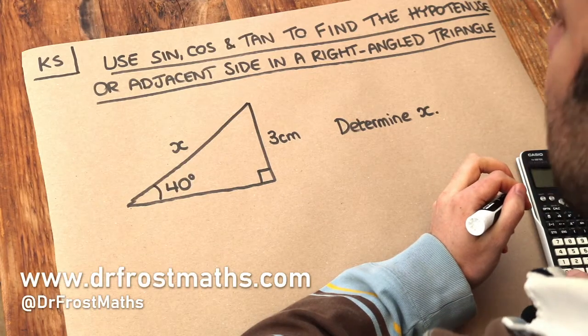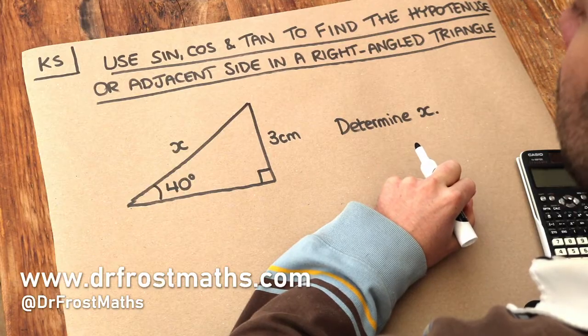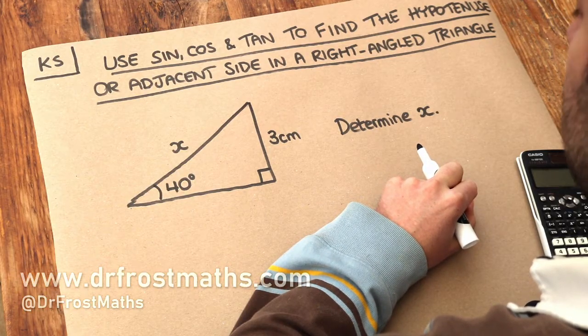Hello and welcome to this Dr. Ross Math's key skill video on using sine, cos and tan to find the hypotenuse or adjacent side in a right angle triangle.